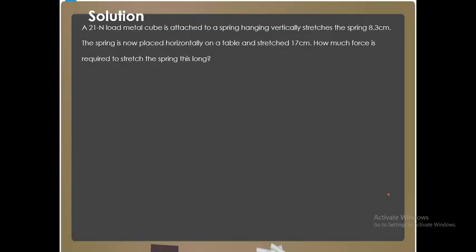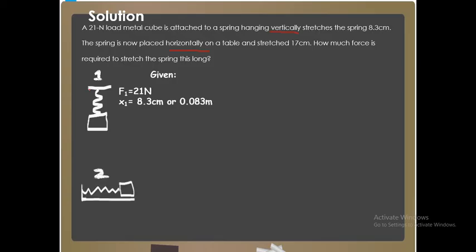I think that you are done. Let us now check your answer. In solving this problem, it is important that you are able to visualize the problem. As you can see, the spring is being placed into two different positions, vertical and horizontal, but it is the same spring. You have the first scenario vertical: given F1 21 newtons, X1 0.083 meters. After that, the spring was placed horizontally. X2 equals 0.17 meters. What is being required? The force or F2. How do we solve for the force? We need to find what is missing that is common in these two scenarios first, and that is the spring constant or k.